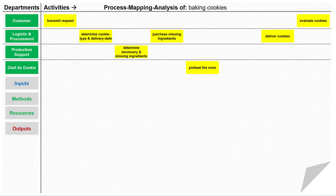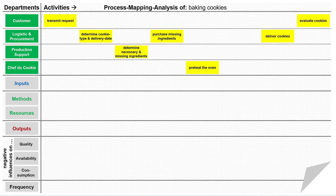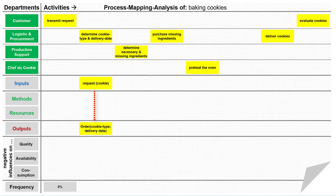In the next three lines, the negative influences of the methods and resources on or from the activity must be specified. In the last line, the percentual frequency must be estimated — how often the negative influence affects the activity. The first activity, transmit request for cookies, is executed by the customer, and we do not know or care about influences in activities of customers. After receiving the input — request for cookies, already evaluated in the input analysis — our bakery determines the cookie type and delivery date.